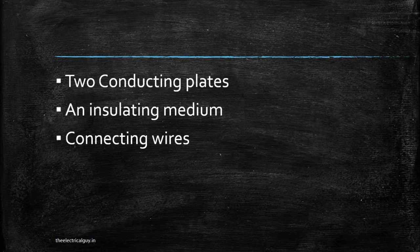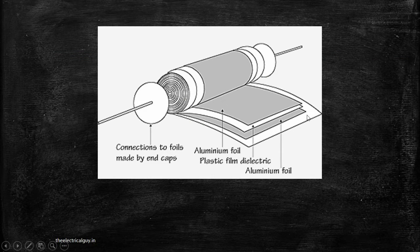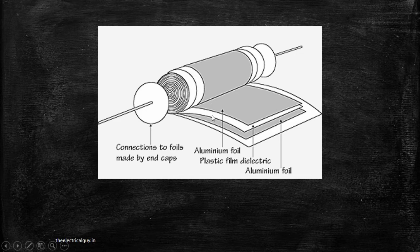Nowadays, as technology has grown, the conducting plates are replaced by thin aluminum foil or any conducting material. As you can see in this image, the plates are replaced by aluminum foil — a positive foil and a negative foil. In between them, you need an insulating medium or dielectric, so dielectric paper is inserted between the foils, and two connecting wires are connected to the foils. This is the modern construction of a capacitor.